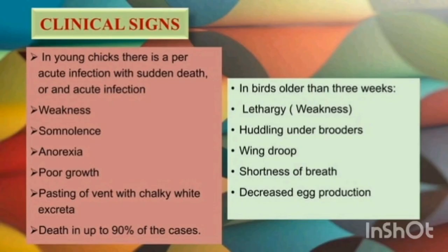Clinical signs are different in young birds and older birds. In young birds, it presents in peracute form which can cause sudden death, weakness, somnolence, anorexia, poor growth, and pasting of the vent with chalky white excreta.